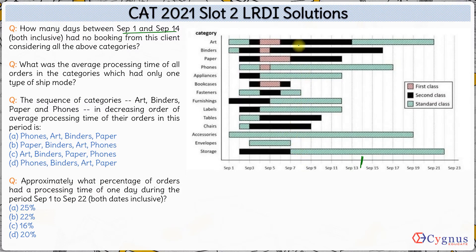September 8 had no booking. September 9 also had no booking. September 10 again had no booking. September 11 again had no booking. September 12 had no booking. September 13 had a booking for the arts category. September 14 had no booking. So there are 6 days total with no booking.